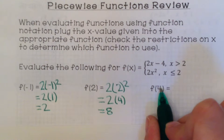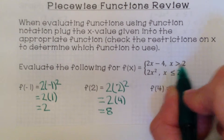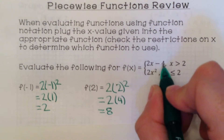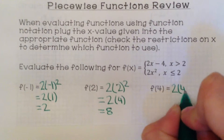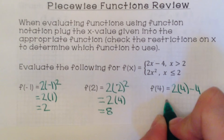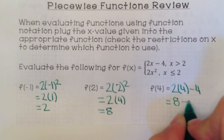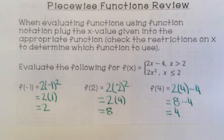Now for f of 4, where the x value is 4. I have to use the top function because this is for x values greater than 2. So 2x minus 4: 2 times 4 minus 4. 2 times 4 is 8, and 8 minus 4 gives us 4.